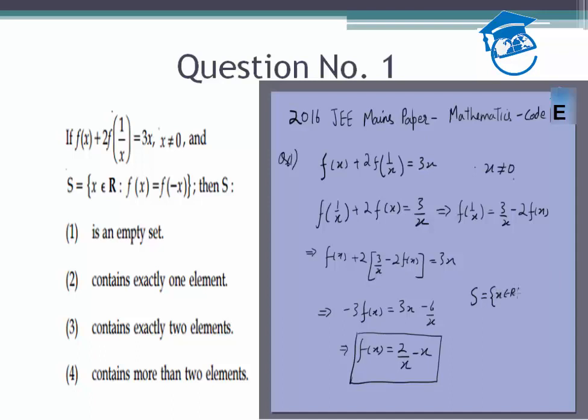This will give me 2/x - x = -2/x + x, which gives me 4/x = 2x, or x² = 2, or x = ±√2.